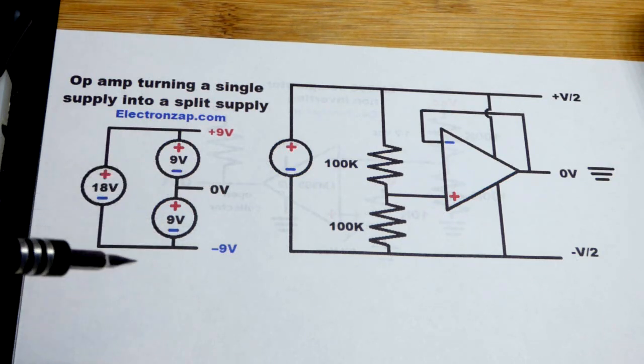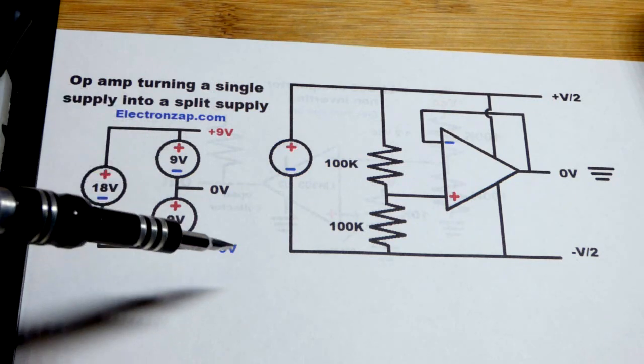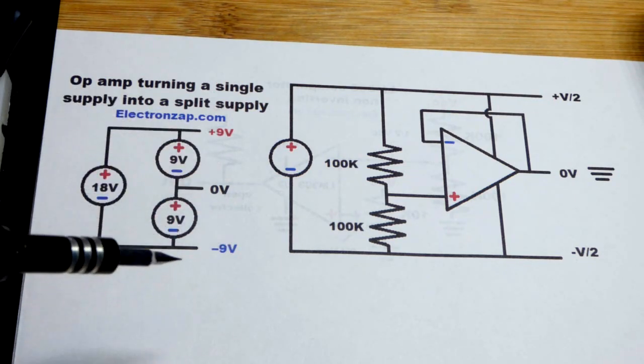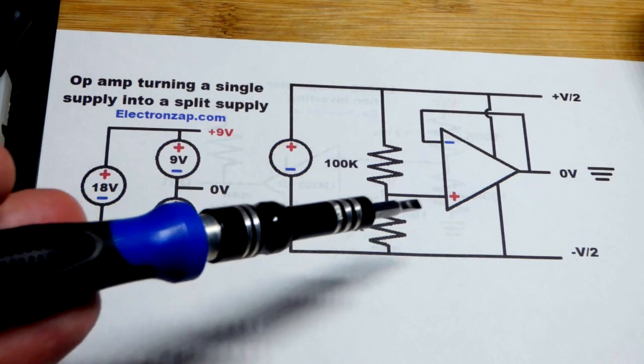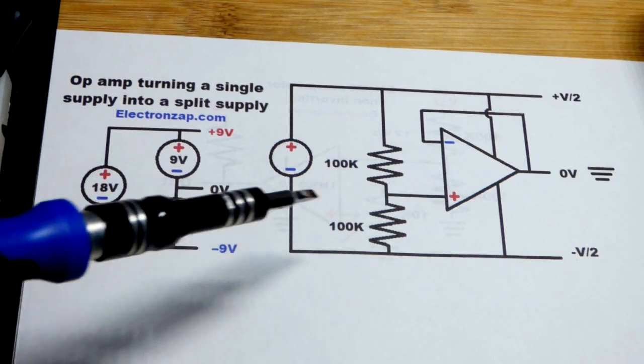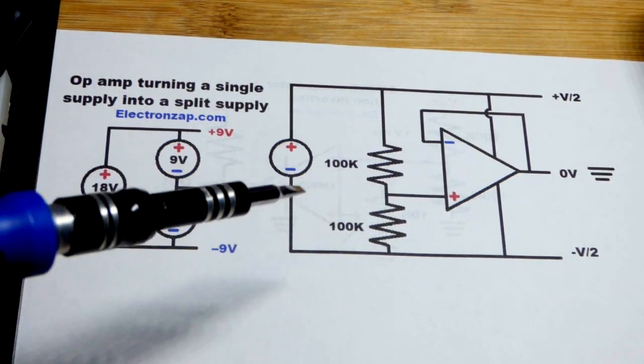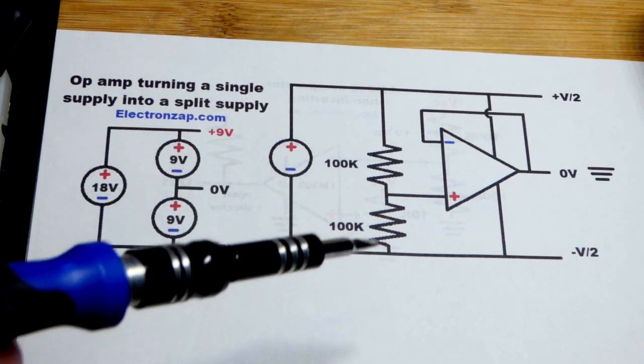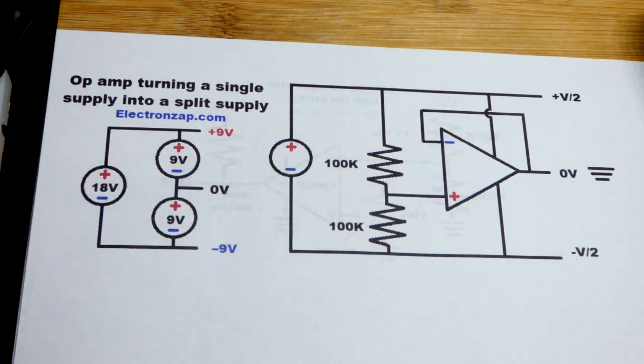So we're going to do basically the same circuit where we split a single supply voltage, but we're going to use an op-amp.